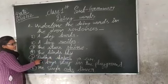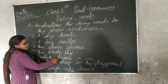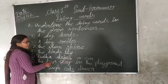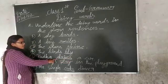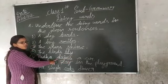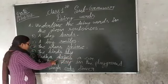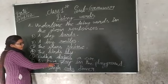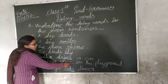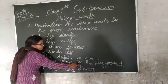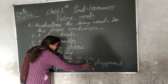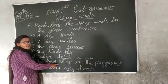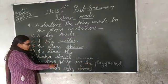So you can easily see the birds fly. In this line, I'm talking about the birds fly — fly is a doing word. The birds fly. People play in the playground. In this line, fly is a doing word.